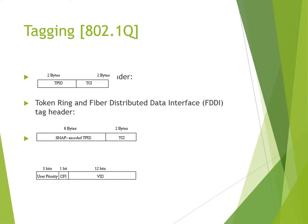Dynamic filtering entry and group registration entry follow the GVRP protocol. Dynamic registration entry — tagging with 802.1Q: TPID, TCI structure. Token Ring and FDDI (Fibre Distributed Data Interface) tag header uses SNAP-encoded TPID and TCI. User priority is 3 bits, CFI is 1 bit, and VID is 12 bits.